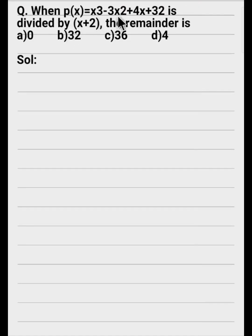p(x) is equal to x³ minus 3x² plus 4x plus 32 and it is divided by x plus 2. What is the remainder? Let's solve this.